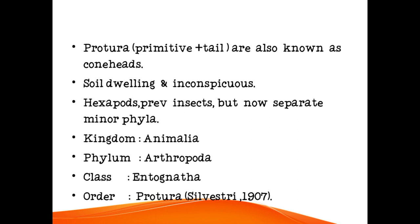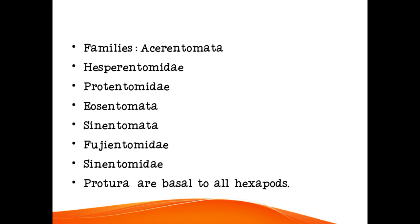Kingdom Animalia, Phylum Arthropoda, Class Entognatha, Order Protura, given by Silvestri in 1907. Families include Acerentomidae, Protentomidae, Eosentomidae, Sinentomidae, and Fujientomidae. Protura are basal to all hexapods — meaning all hexapods arise from Protura.